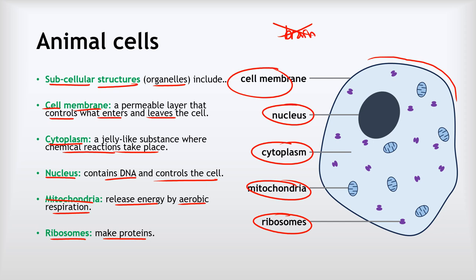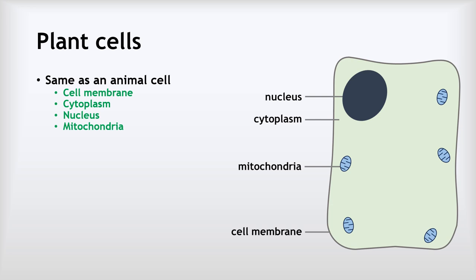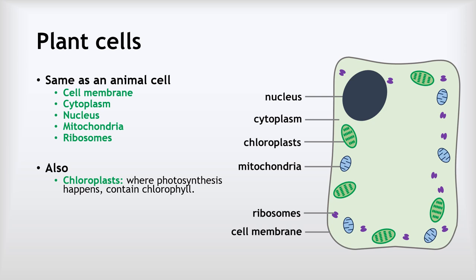Onto our plant cells. Now plant cells are more complicated than animal cells. In addition to the cell membrane and the cytoplasm and the nucleus, the mitochondria and the ribosomes, they've got three other organelles, three other subcellular structures.